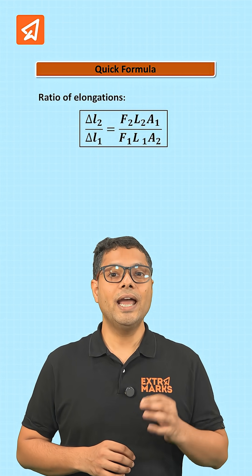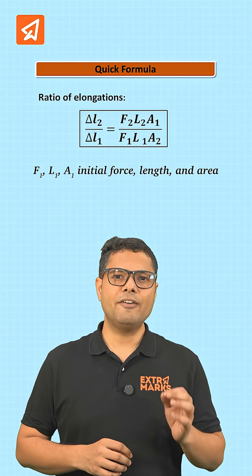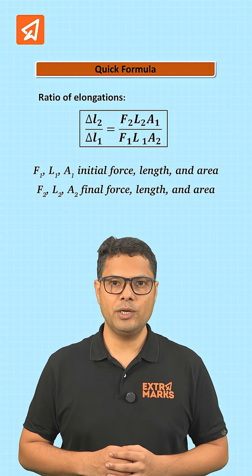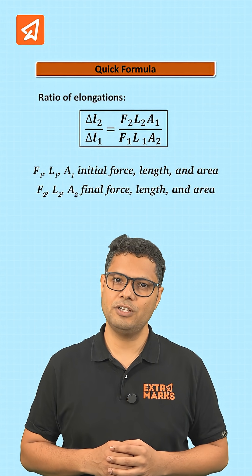According to the formula, ratio of elongations is equal to F2 L2 A1 by F1 L1 A2, where F1 L1 A1 and F2 L2 A2 are initial and final force, length and area of cross-section of the wires respectively.